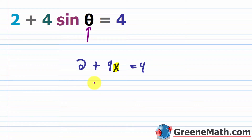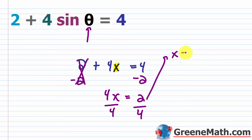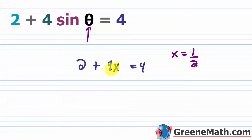Before going through this, let's look at something from basic algebra. If I had 2 plus 4x is equal to 4, I would first try to isolate x. I would subtract 2 from each side, getting 4x equals 2, then divide both sides by 4, giving x equals 1/2. Plugging in 1/2: 2 plus 4 times 1/2 is 2 plus 2, which equals 4 — the correct solution.